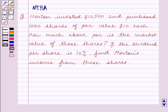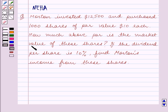Hello and welcome to the session. In this session we will discuss the following question: Morton invested $12,500 and purchased 1,000 shares of par value $10 each. How much above par is the market value of these shares? If the dividend per share is 10%, find Morton's income from these shares.